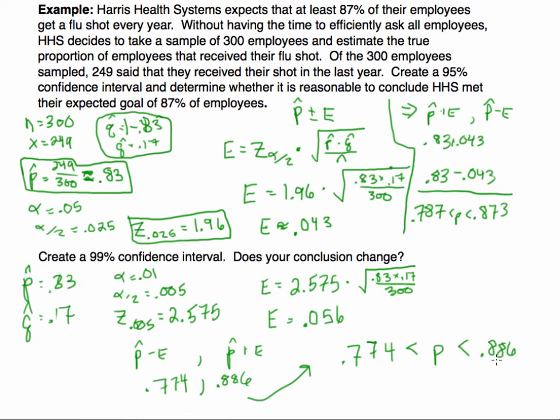It makes sense that our interval is now larger. We want to have a little bit more confidence. We want to increase our confidence, so we have to include more values. So our conclusion didn't change.